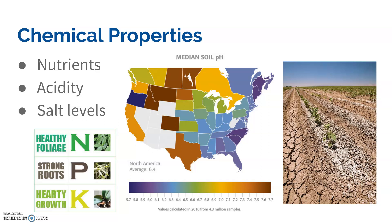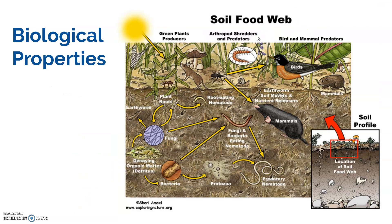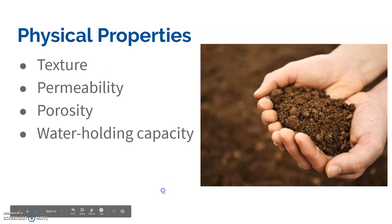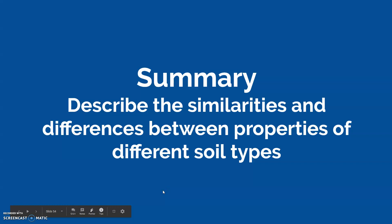We'll talk more about salinization and ways to fix it when we get to soil issues in agriculture. Biological properties refer to anything living in the soil and how it affects things — organisms add organic matter and also aerate the soil as they move through it. Physical properties include texture — the amounts of sand, silt, and clay — as well as permeability, porosity, and water holding capacity. To summarize, you want to be able to describe the similarities and differences between the properties of different soil types.